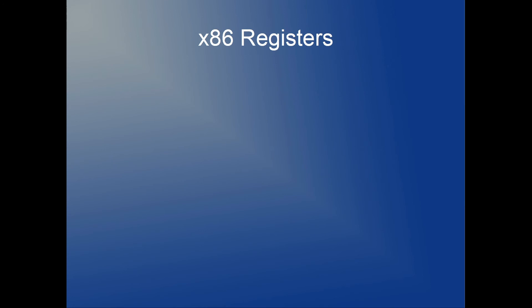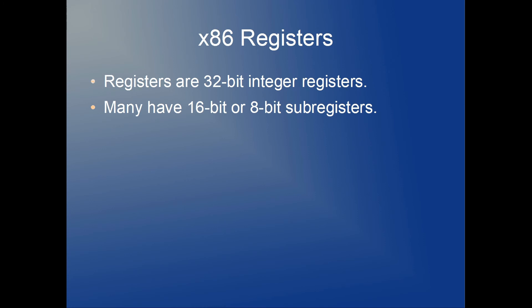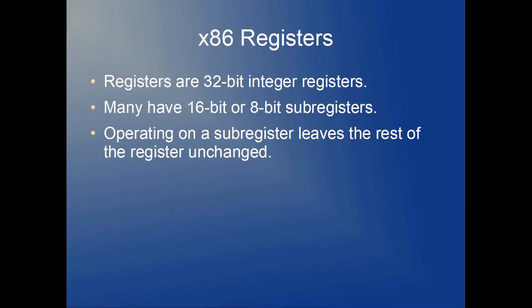Registers are 32-bit integer registers. Many of these registers have 16-bit or 8-bit sub-registers that can be addressed apart from the register as a whole. Operating on a sub-register will leave the rest of the register unchanged, so you don't have to use all 32 bits — you could use 16 bits or 8 bits.